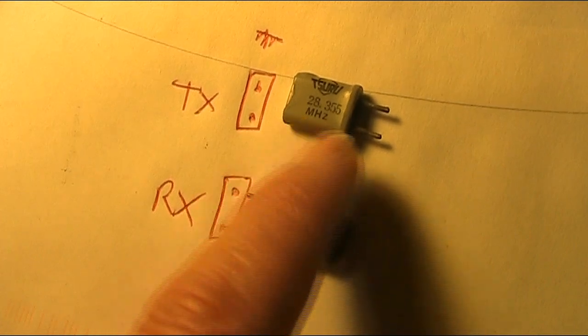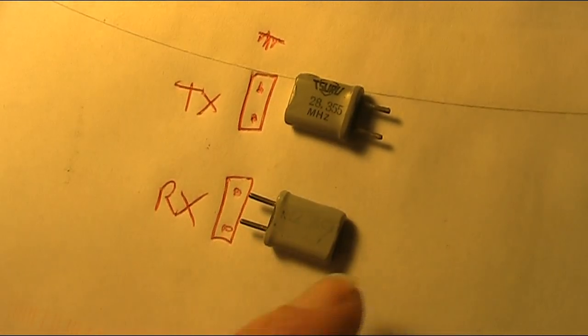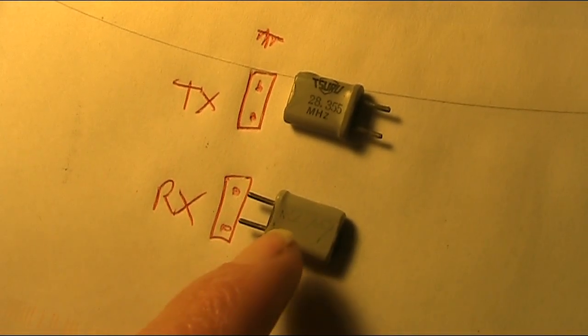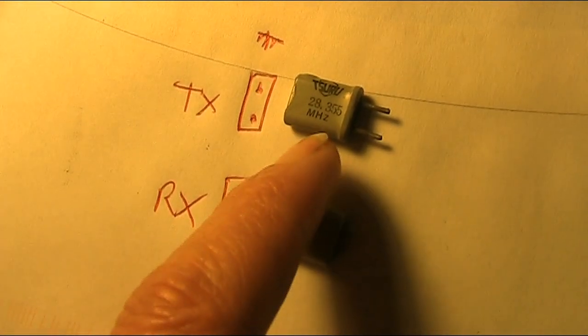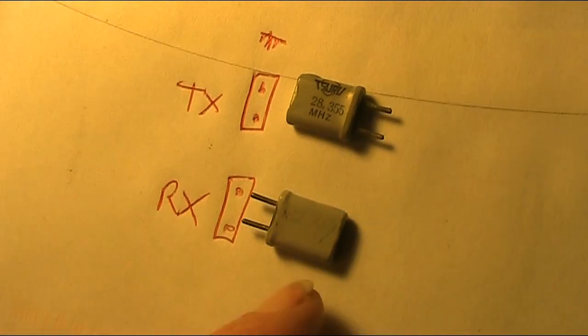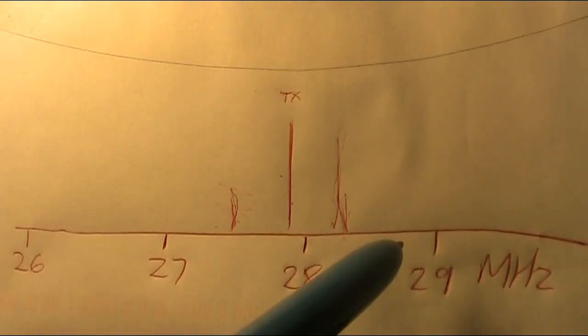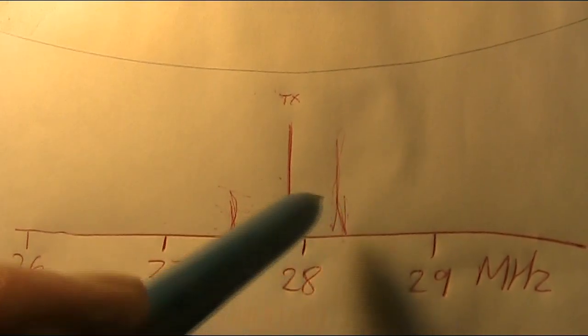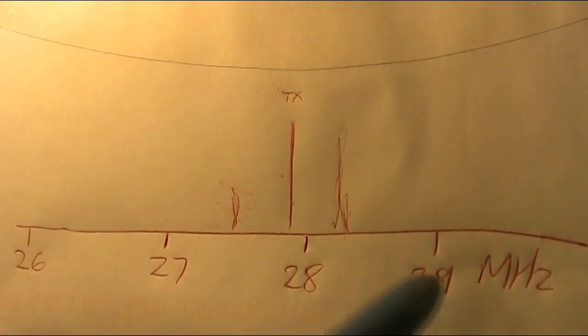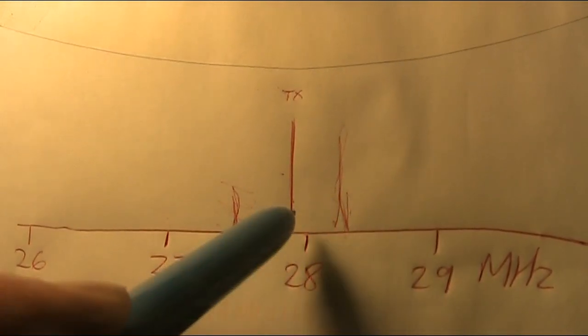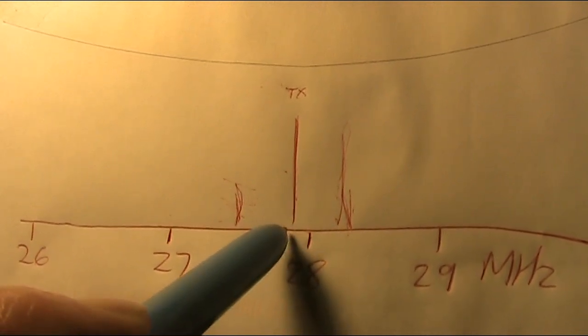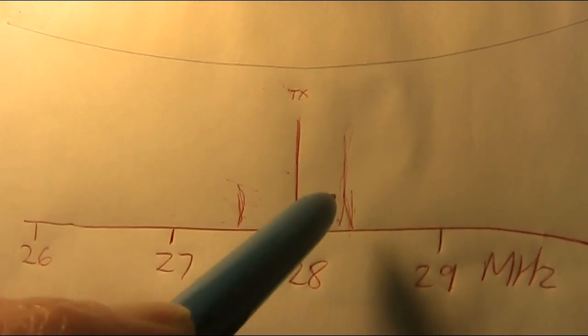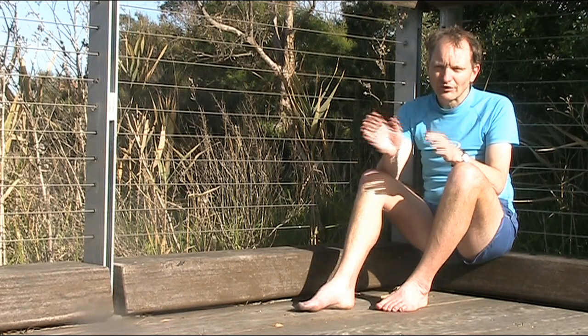Or you might need to peak the transmitter up a little bit as well. But only possible if you've got the right crystals, and that means a high side receiving crystal like you see here. So, by doing that, swapping those two crystals, you have just converted a walkie-talkie from a 27 meg marine band to 28 MHz.